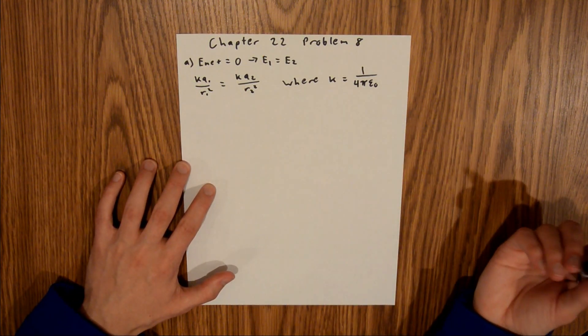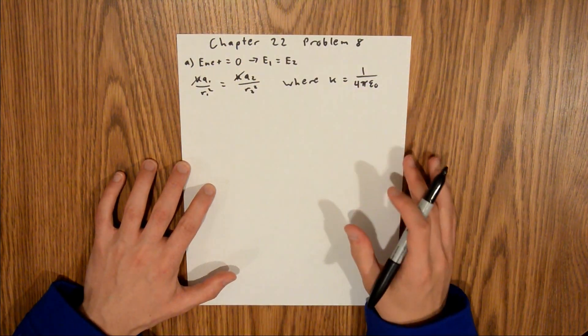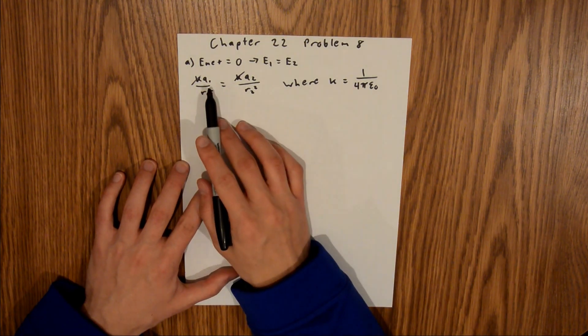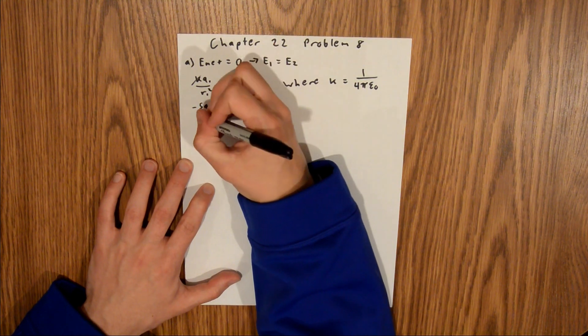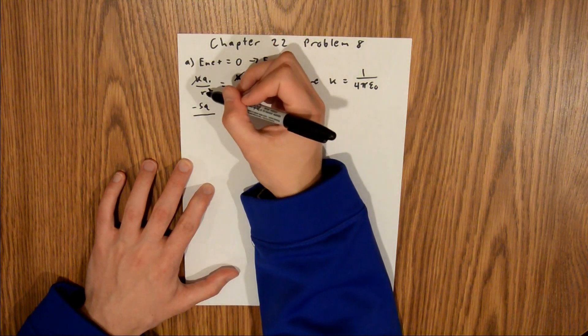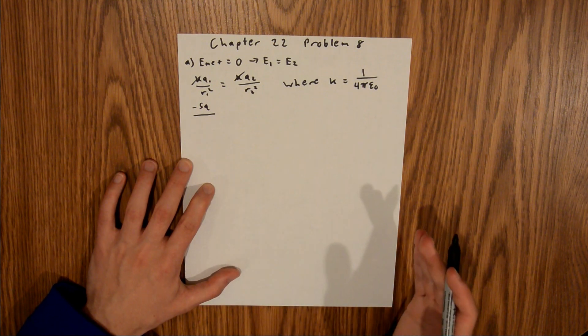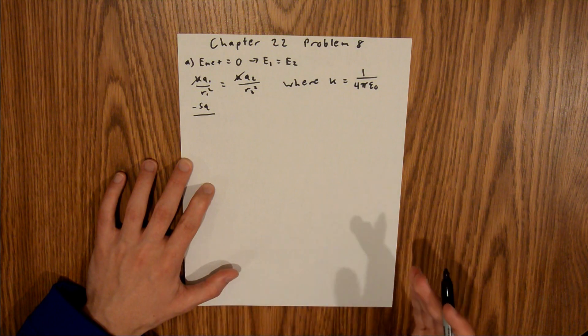And in this case, we actually have k on both sides, so we can cancel them out. So I'll cancel out those k's, and I'm also going to expand out all the values, and so we're told that q1 is negative 5q, and so negative 5q divided by r1, so the distance from charge 1 to our point in space where the electric field is zero. And so, I'm just going to say that distance is x.